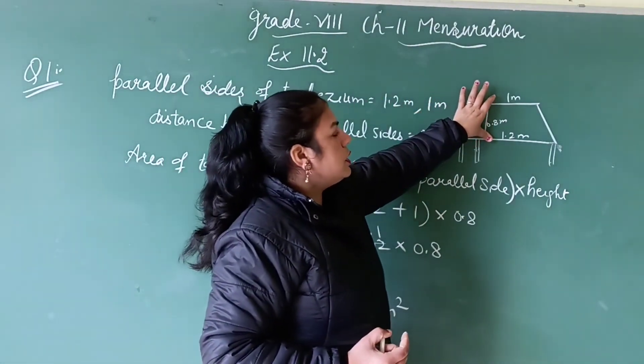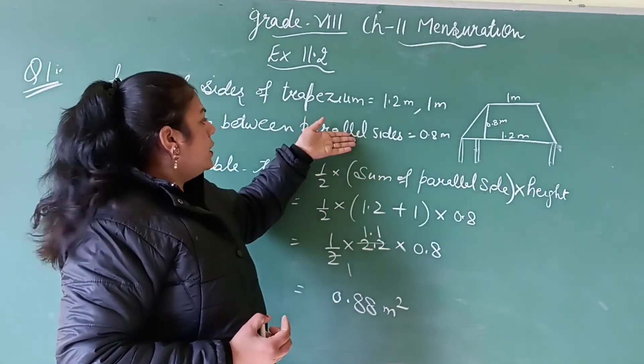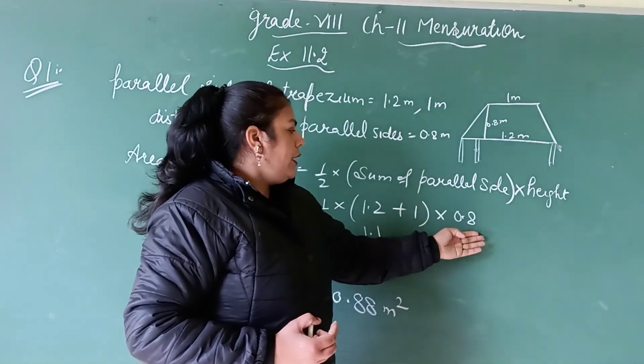The perpendicular distance between 2 parallel sides. The parallel sides we have are 1.2 and 1, and height is 0.8.